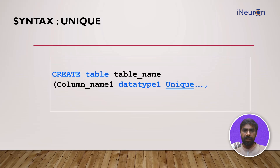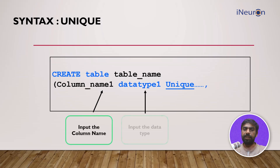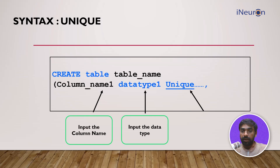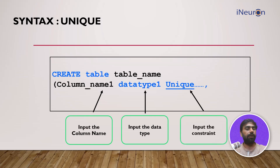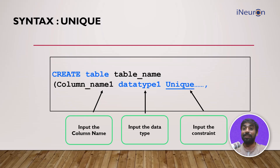You create a table, give the table name, start giving the column name, give the data type of the column, and then you enter the constraint called unique. Once you give this constraint, you'll not be able to enter a duplicate value in that particular column. Let's see how this happens in SQL.